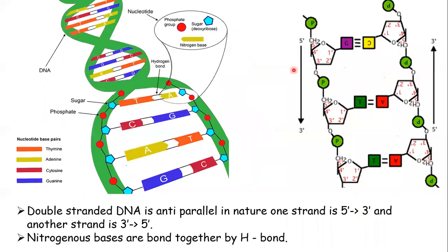DNA is double-stranded and helical in nature. The two strands are antiparallel to each other — one runs 5' to 3' and the other runs 3' to 5'. The two strands are joined by hydrogen bonds between complementary nucleotides. Among the four different nucleotides, A pairs with T and G pairs with C.